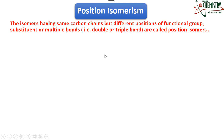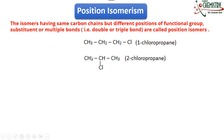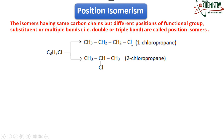Let me explain with examples. In the first example, these two compounds have the same molecular formula — three carbons, seven hydrogens, and one chlorine. In the first compound, the chlorine atom is attached to the first carbon, but in the second, the chlorine atom is connected to the second carbon. So the position of chlorine has changed — these are position isomers.